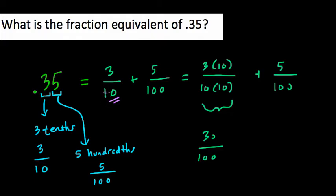So I multiply 10 by 10 to get to hundredths, but I want to keep this relationship proportional, so I also multiply the 3 by 10. In other words, I multiply the numerator and denominator by 10,